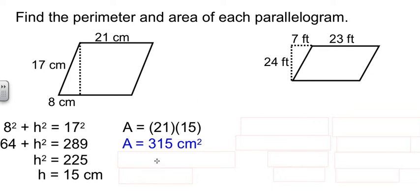Now for the perimeter, all we need is the four sides. I have two sides that are 21. And I have two sides that are 17. Which adds up to 76 centimeters.